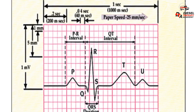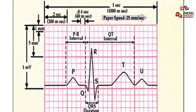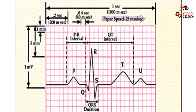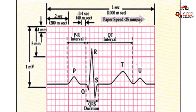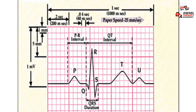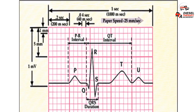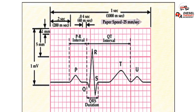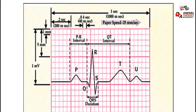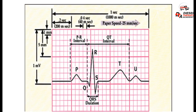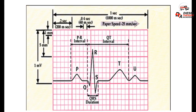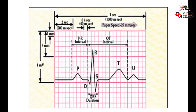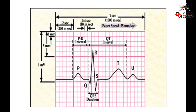ECG paper is a grid where time is measured along the horizontal axis. Each small square is one millimeter in length and represents 0.04 seconds. Each larger square is five millimeters in length and represents 0.2 seconds. Voltage is measured along the vertical axis, and 10 millimeters is equal to 1 millivolt in voltage. This diagram illustrates the configuration of ECG graph paper and where to measure the components of the ECG waveform.